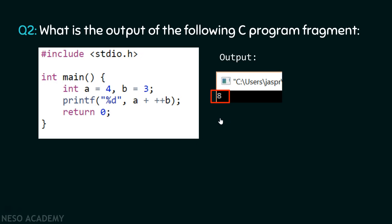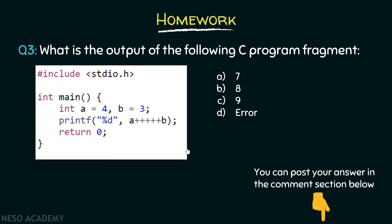This is all about token generation. The key concept is knowing how to generate tokens for such statements, which is why understanding the lexical analyzer is important. Now here is a homework question: what is the output of the following C program fragment? In the printf function, the statement has five plus operators followed by operand b. Mimic the behavior of the lexical analyzer to produce the answer. Is it a) 7, b) 8, c) 9, or d) error? Post your answer in the comment section below.